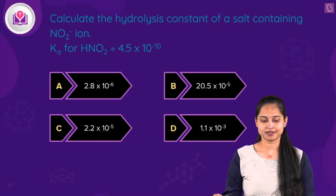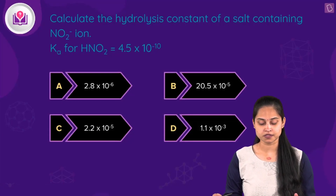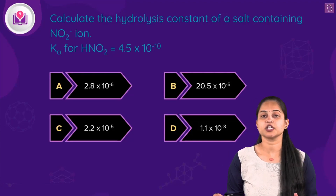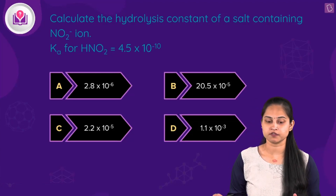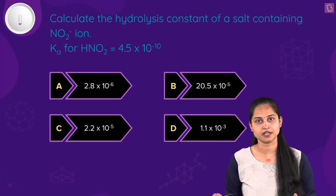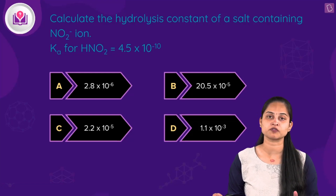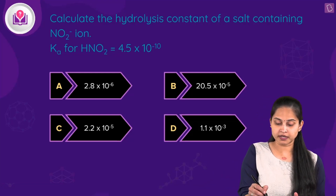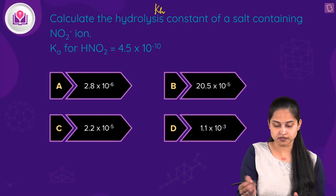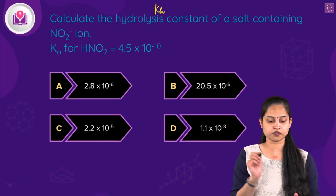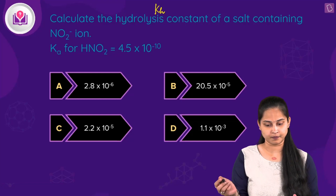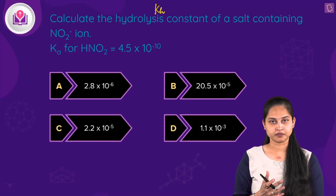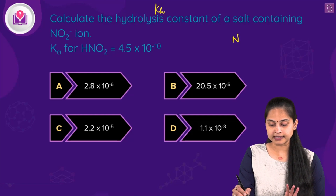The next question asks us to calculate the hydrolysis constant of a salt containing nitrite ion. The dissociation constant Ka for nitrous acid HNO₂ is given as 4.5 × 10⁻¹⁰. We need to find the hydrolysis constant KH.